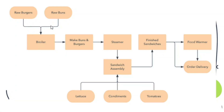This is an example of a business process map — for example, a burger stand. When you see the map, you can easily follow along: you start with raw burgers and raw buns, put them in the broiler, make buns and burgers, place them in the steamer, then do sandwich assembly adding lettuce, condiments, and tomatoes, place finished sandwiches in the food warmer, and then proceed to delivery. When you have a process map like this, it's easier for businesses and employees to manage and follow their processes.